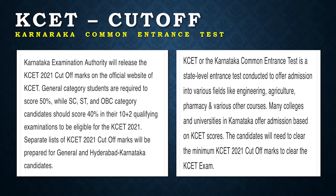The authority will be releasing the 2021 cutoff on the official website. General category candidates are required to score 50% — which is the minimum requirement — in the 10+2 qualifying examination. For SC, ST, and OBC it is relaxed to 40%, so there is a 10% relaxation for reserved category students to be eligible for KCET 2021. This is the minimum requirement, not the cutoff itself.